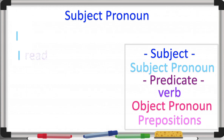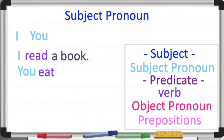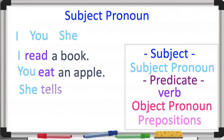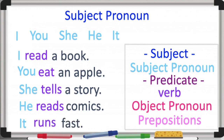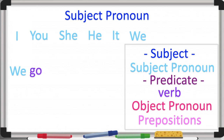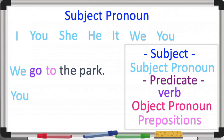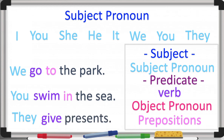We begin with I — 'I read a book.' That's my predicate after 'read.' You eat an apple. She tells a story. He reads comics. It runs fast. We go to the park. You swim in the sea. They give presents. This is only to refresh information because we have studied this a lot and I'm pretty sure you know it by heart.